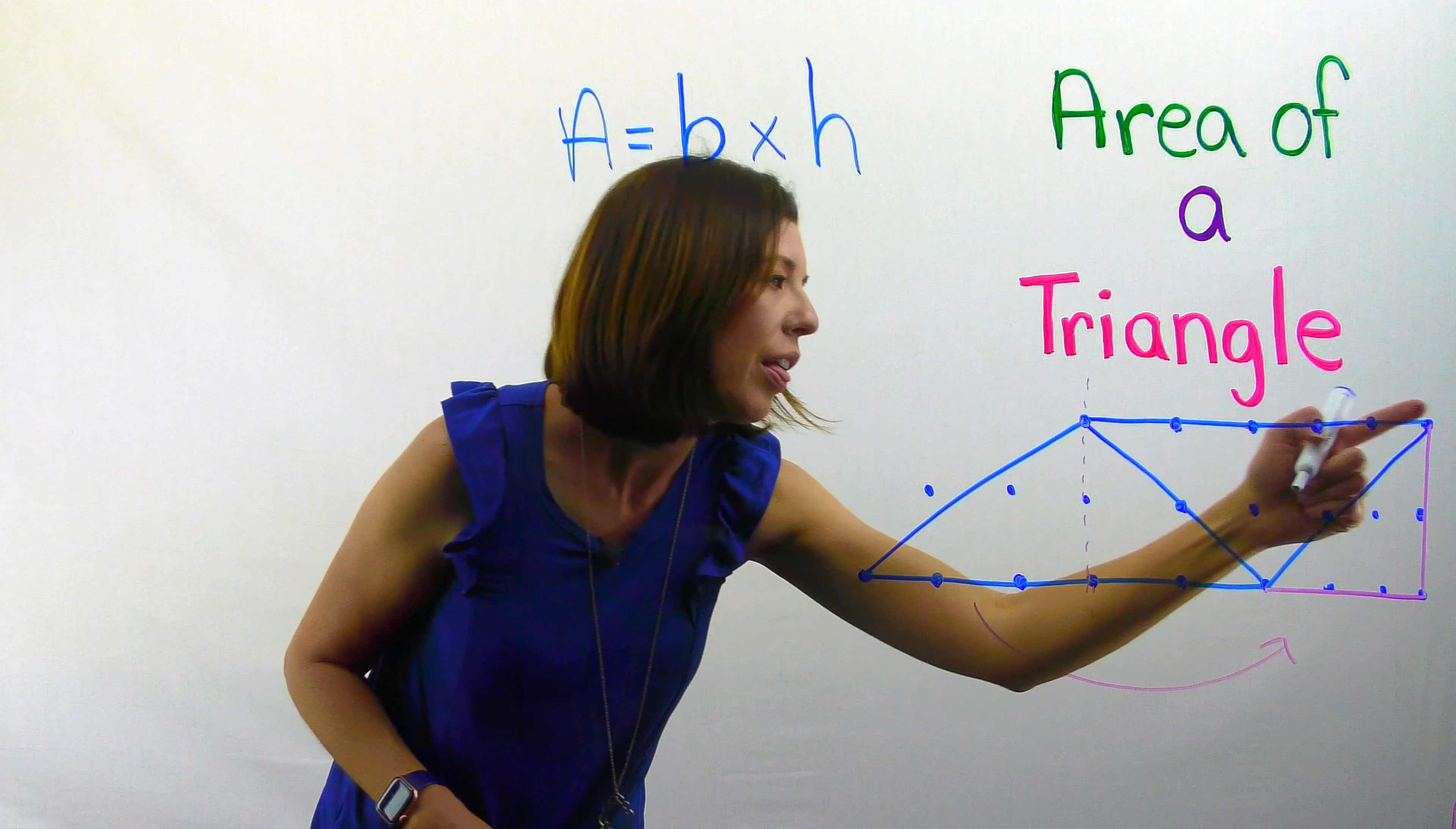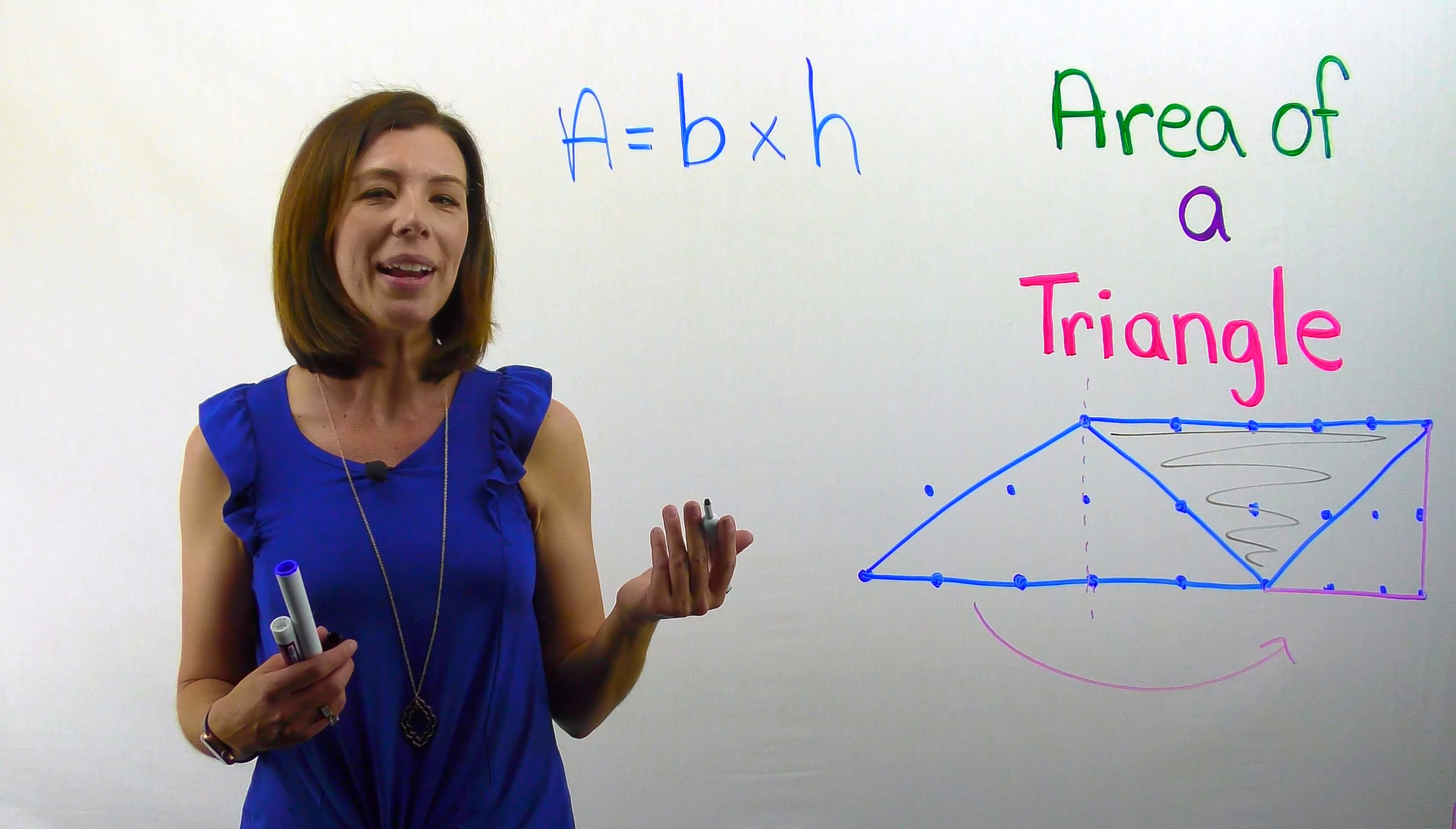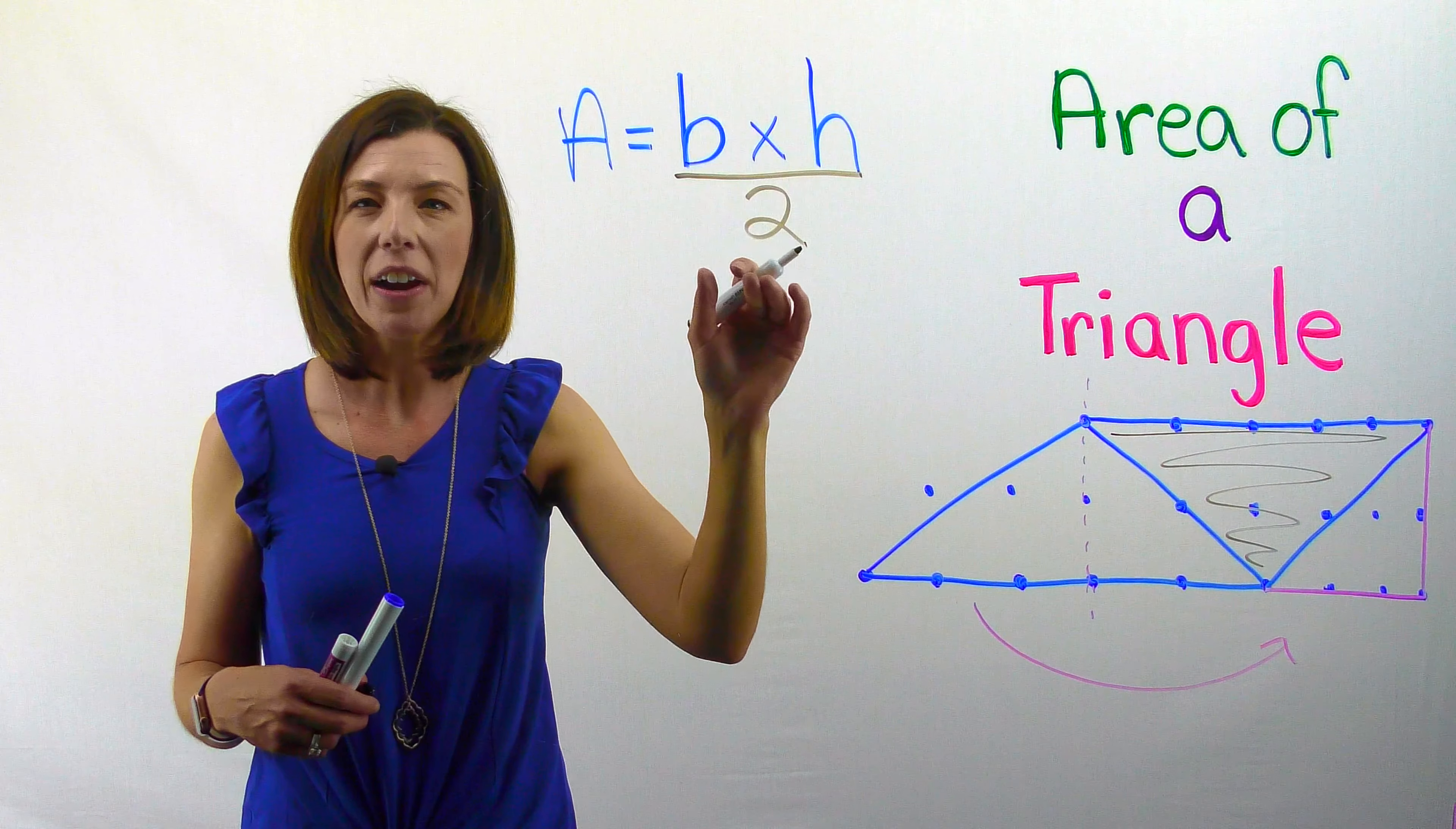That's the area for this parallelogram right here. But again, I'm not wanting the area for the parallelogram. I'm actually only wanting the area for just one of these triangles, right? So what am I going to do? If I made two copies of them, I need to cut it in half. Good job. So I know that I can say base times height, take that area and divide it by two.